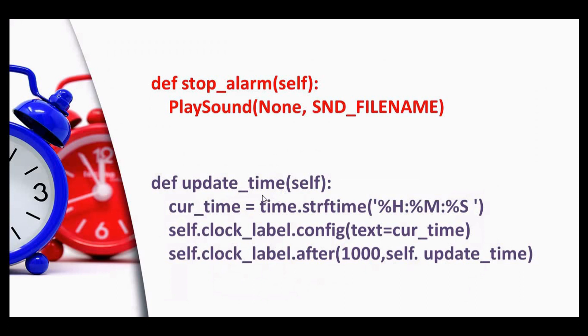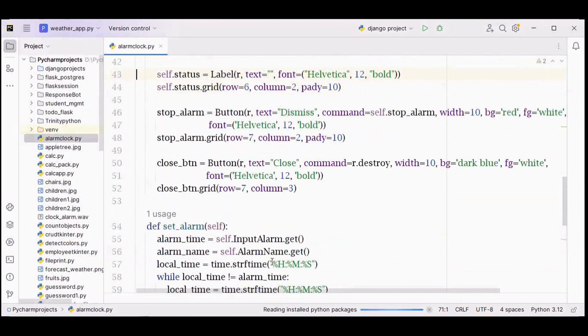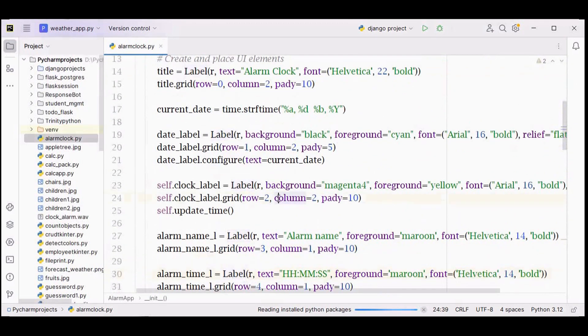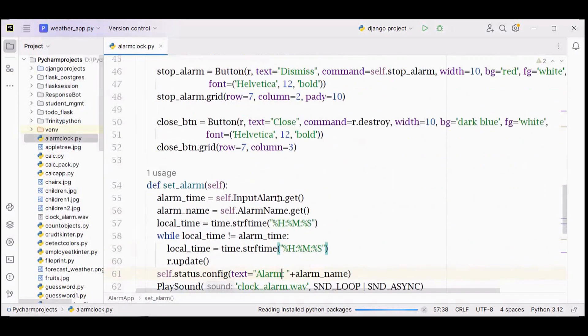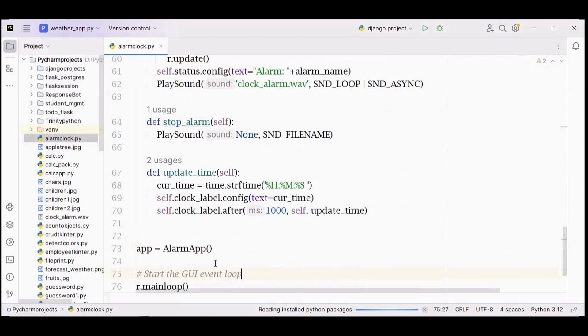self.update_time - so this is the recursive function and the first time this function will be called here. Once the clock label is placed inside this root window, we are calling this update time function.